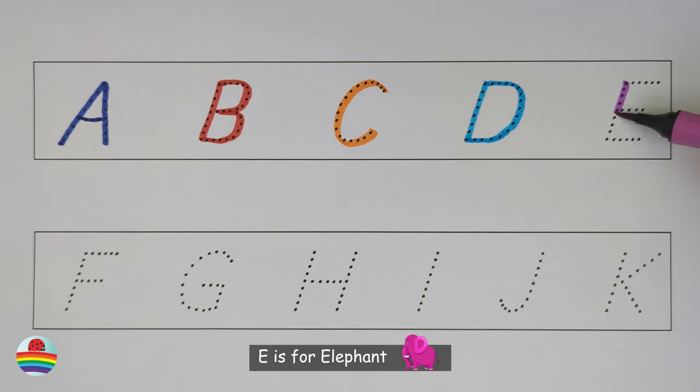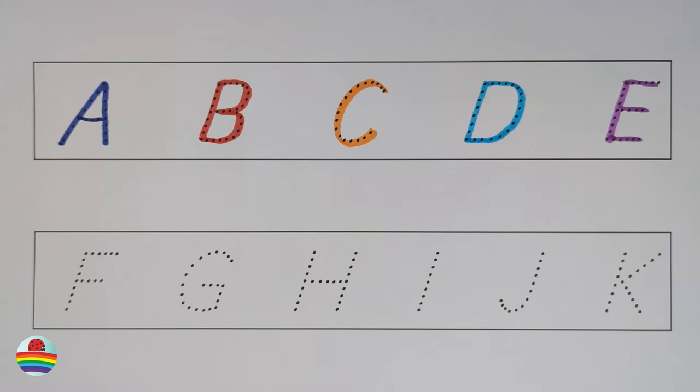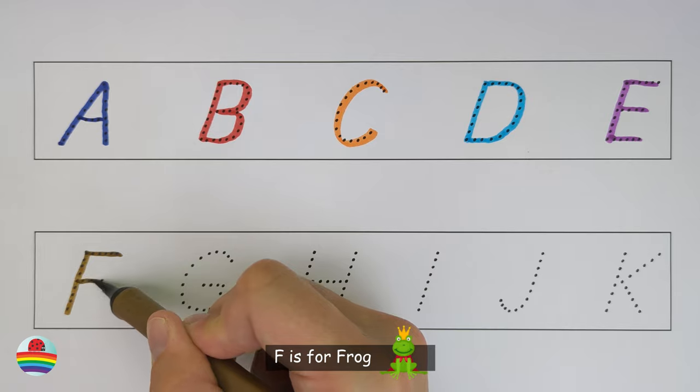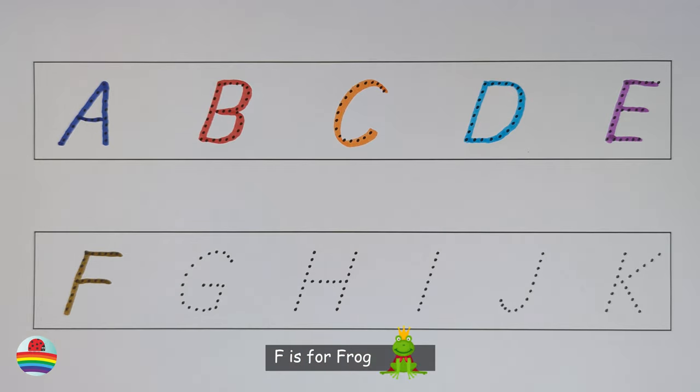E. E is for elephant. E. F. F is for frog. F.